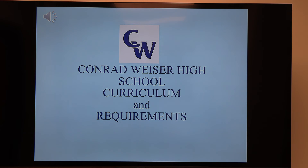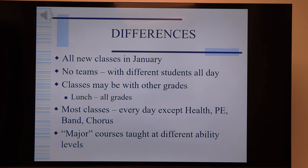Let's go through the differences between middle school and high school. All new classes come in January — we are semesterized, so students take courses in the fall and then change to new classes in mid-January. There are no teams at the high school; you're with different students all day, from one class to the next. Classes may also be mixed with other grades, especially electives — you may be a ninth grader with a 12th grader. Lunches are also based on what class you're taking, so they're mixed with all grades.